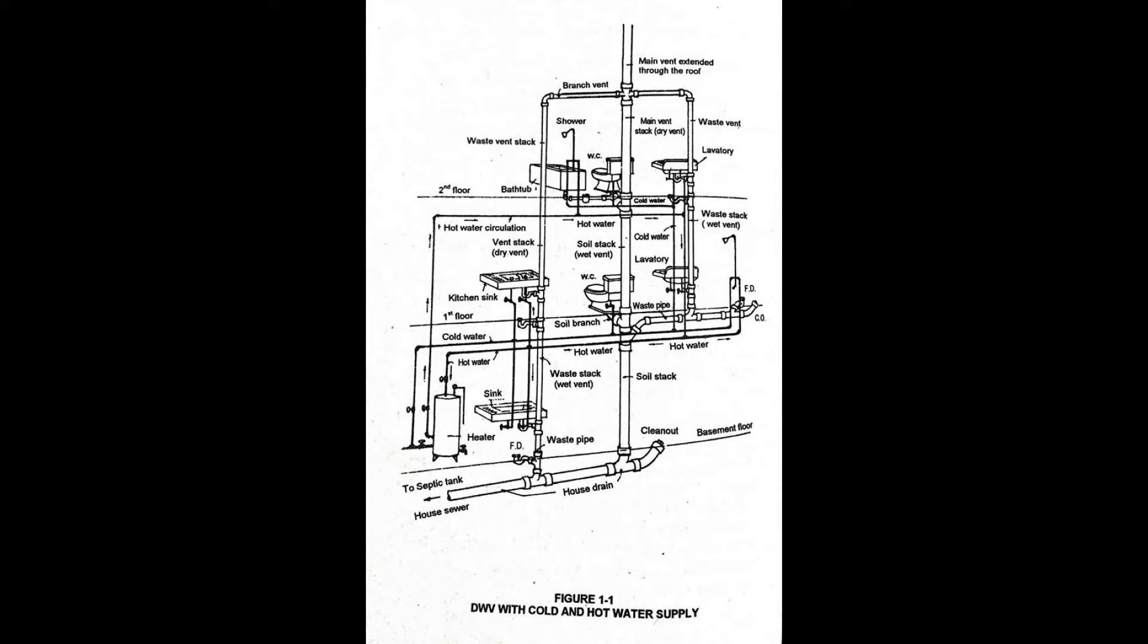Cross connection is any physical connection between two otherwise separate piping systems, one containing potable water and the other from unknown or questionable safety, whereby water may flow from one system to the other depending on the pressure differential between the two systems.